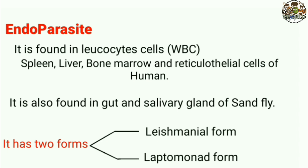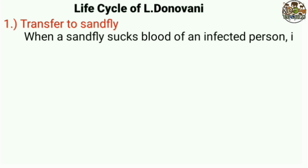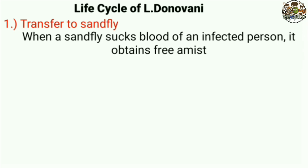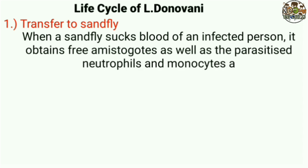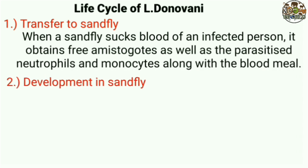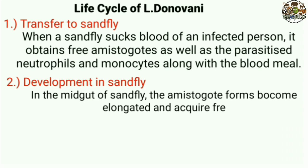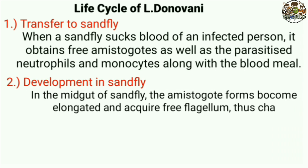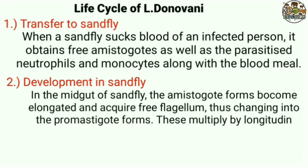It is also found in the gut and salivary gland of the sand fly. It has two forms: the Leishmanial form and the leptomonad form. The life cycle transfers to sand fly when a sand fly sucks blood of an infected person, obtaining free amastigotes as well as parasitized neutrophils and monocytes along with the blood meal.